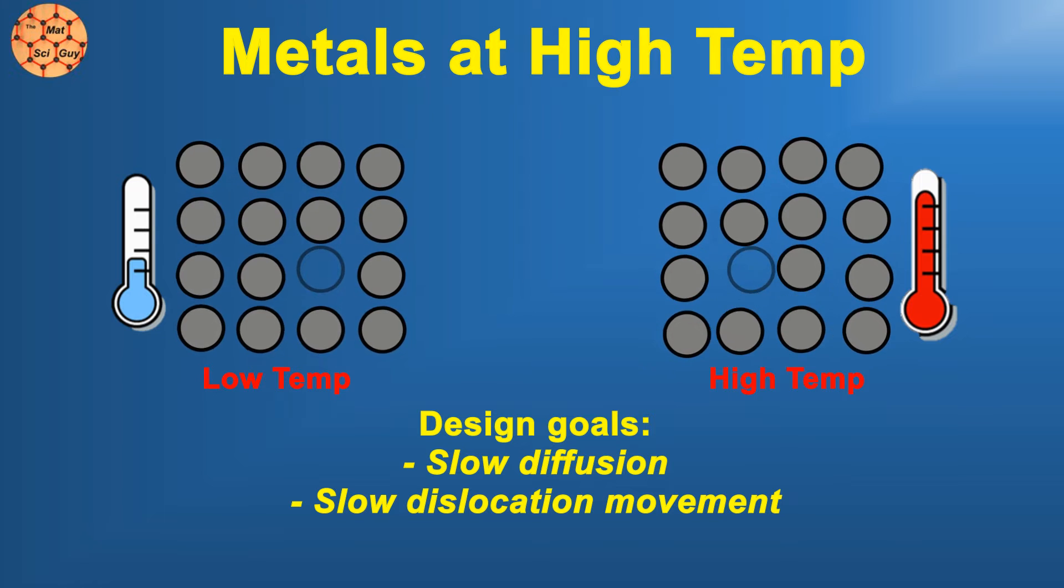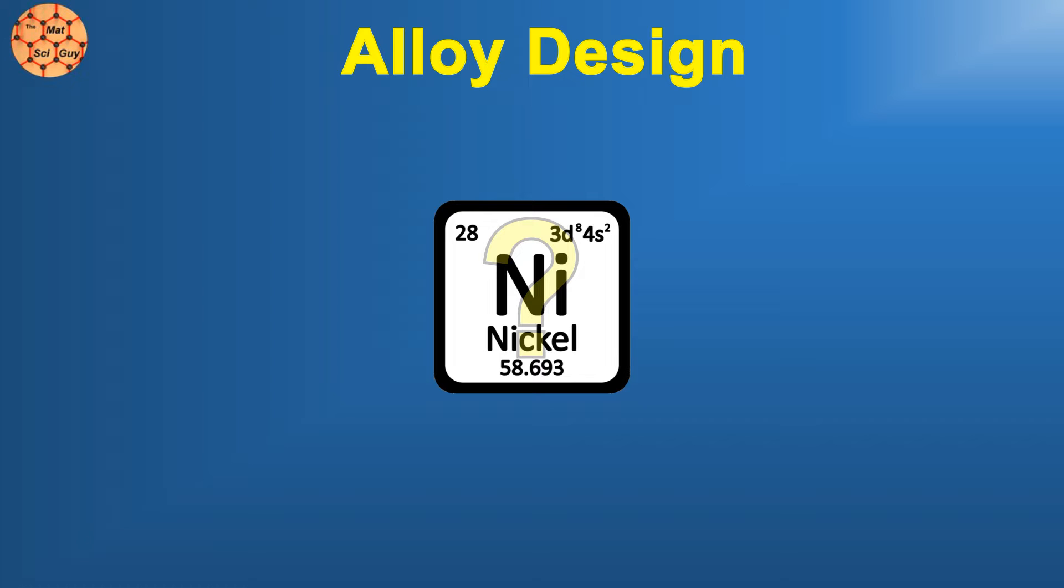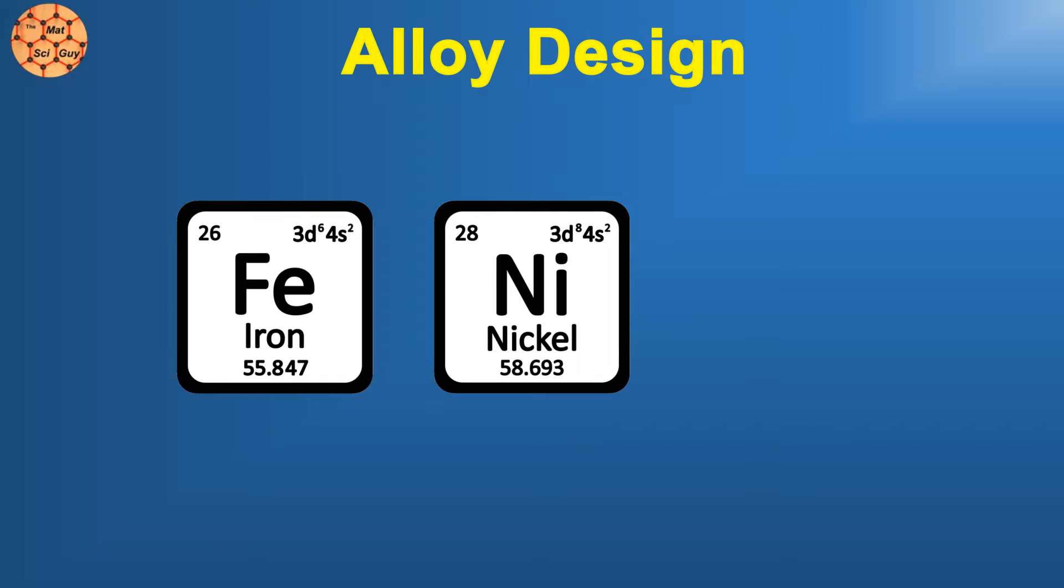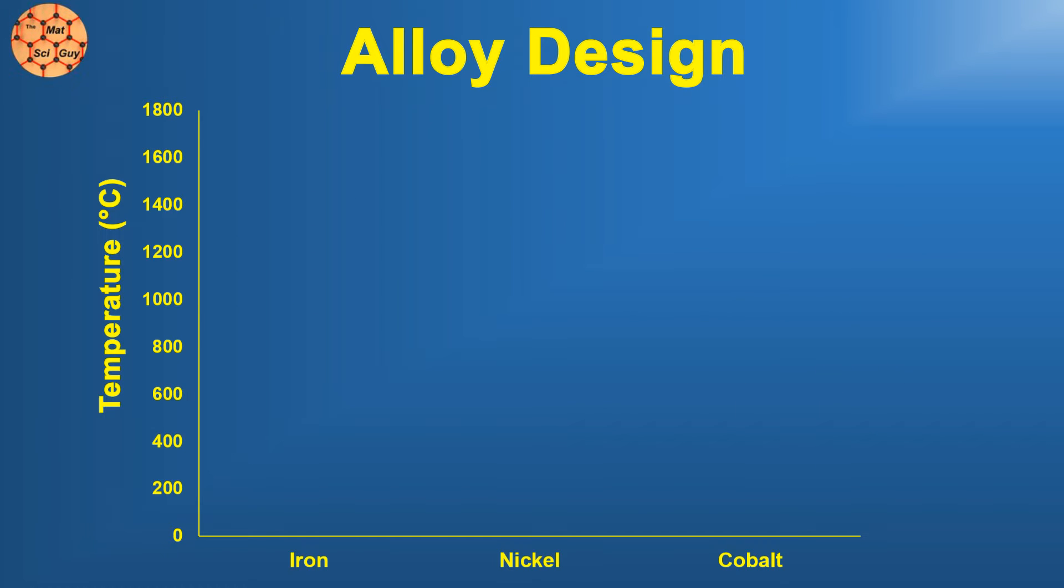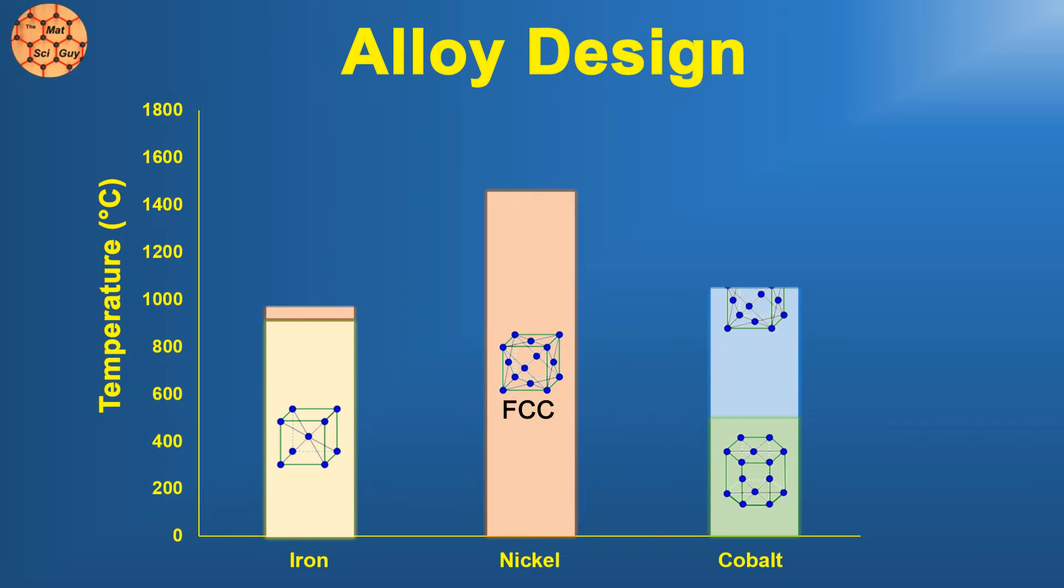Now that we know the challenges, we can start to go over some of the strategies used to make an alloy that's able to operate at extremely high temperatures. First of all, why nickel? Well, superalloys in general can be based on iron, cobalt, or nickel, but nickel is typically the primary element in superalloys that operate at the highest temperatures. Part of the reason is that nickel retains the same structure all the way from room temperature to its melting point, namely face-centered cubic. Iron and cobalt both undergo phase transitions along the way.